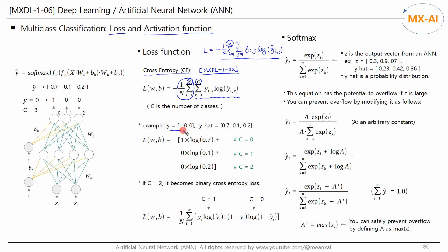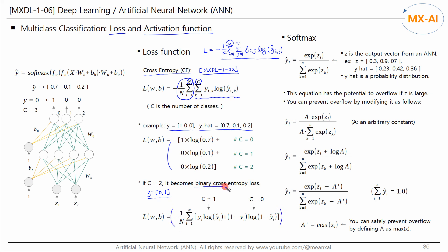For example, if Y and Y-hat are given, the cross-entropy for that data point is calculated accordingly. If there are two classes, Y being 0 or 1, the equation reduces to the binary cross-entropy. Therefore, cross-entropy is a more general expression.